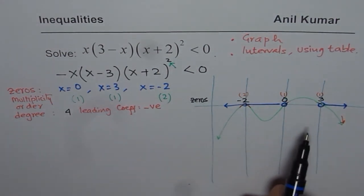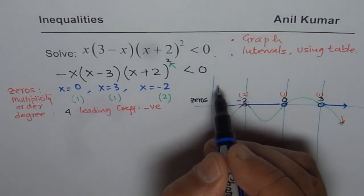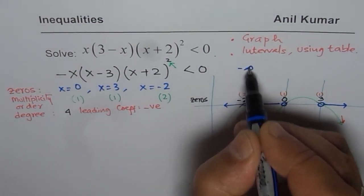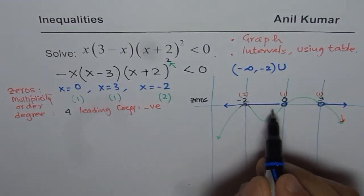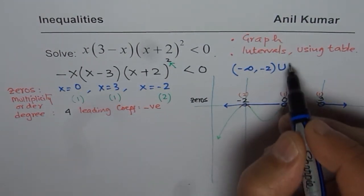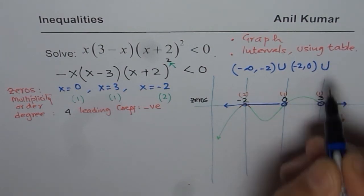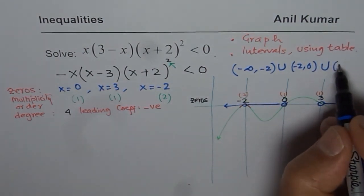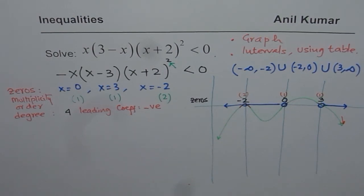So you can see the solution using the graph is: from minus infinity to minus 2, union from minus 2 to 0, union from 3 to infinity. That is the solution for the given inequality found using the graphing method. Simple as that.